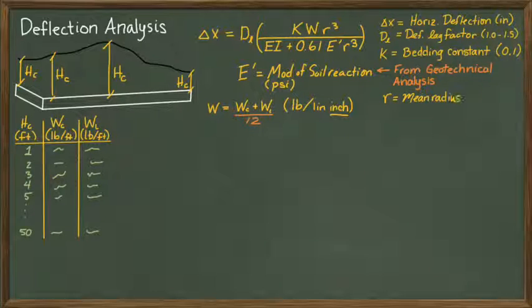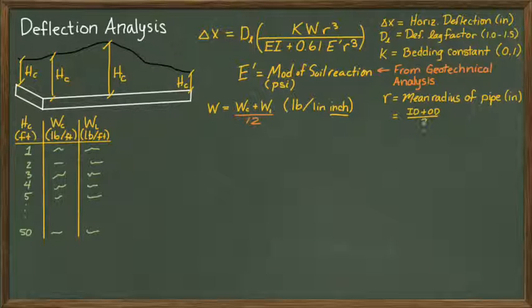R is the mean radius of the pipe in inches. The mean radius is the average of the radius measured to the inside pipe wall, shown as ID, and the outside pipe wall, shown here as OD.